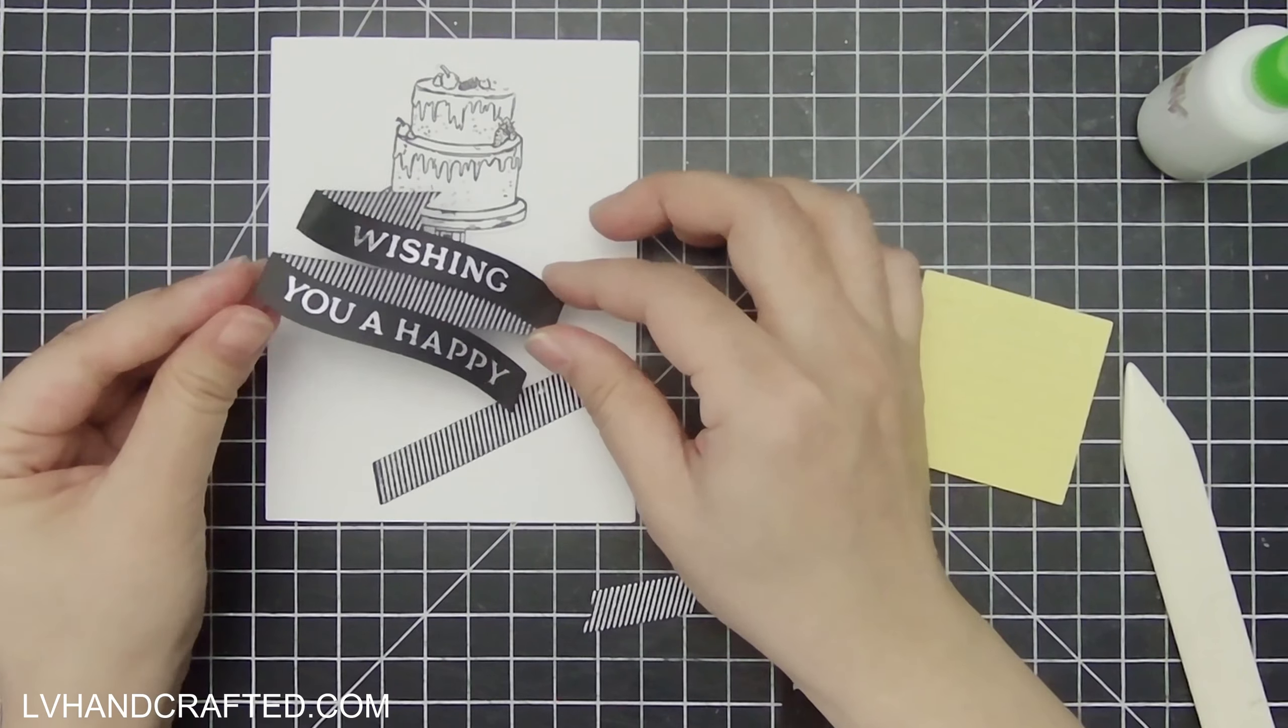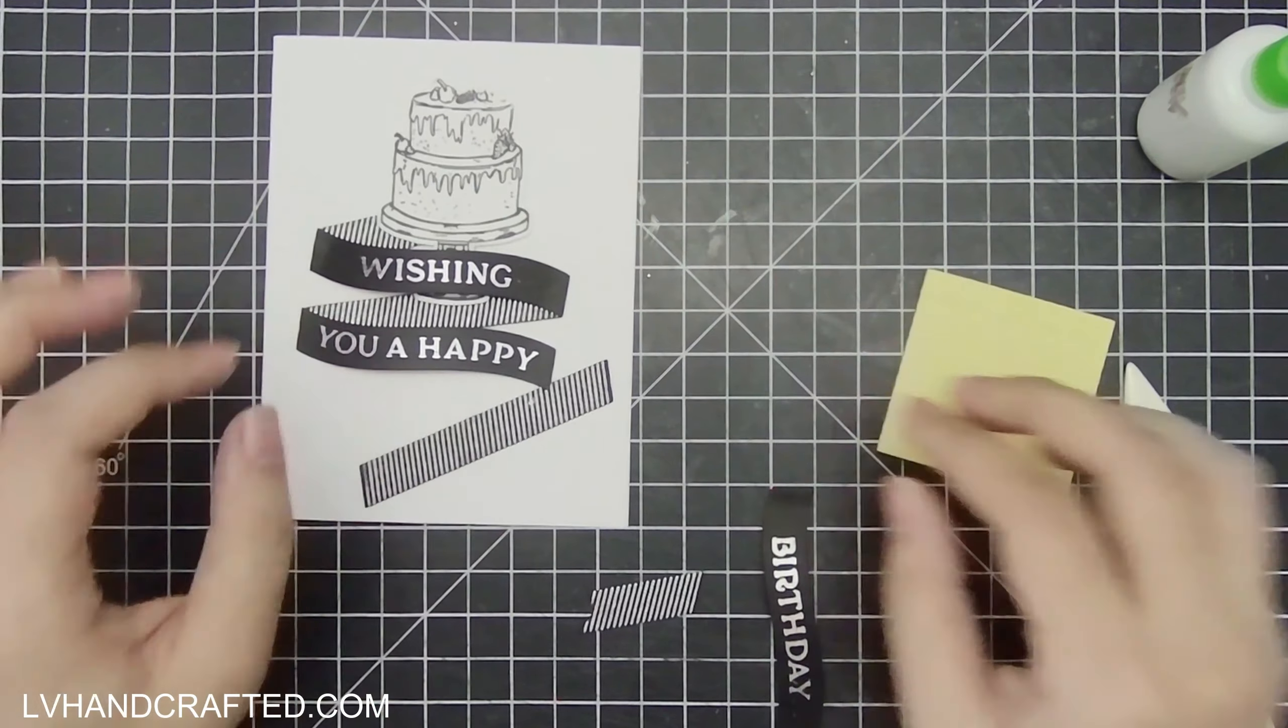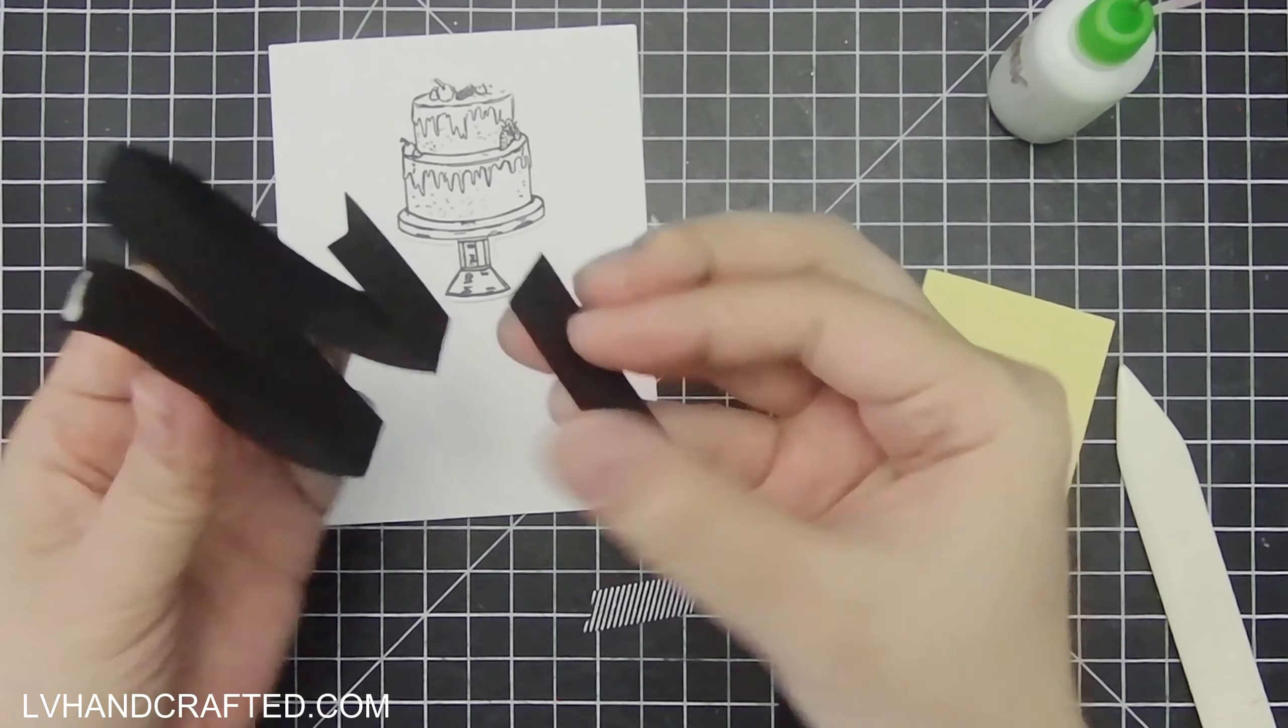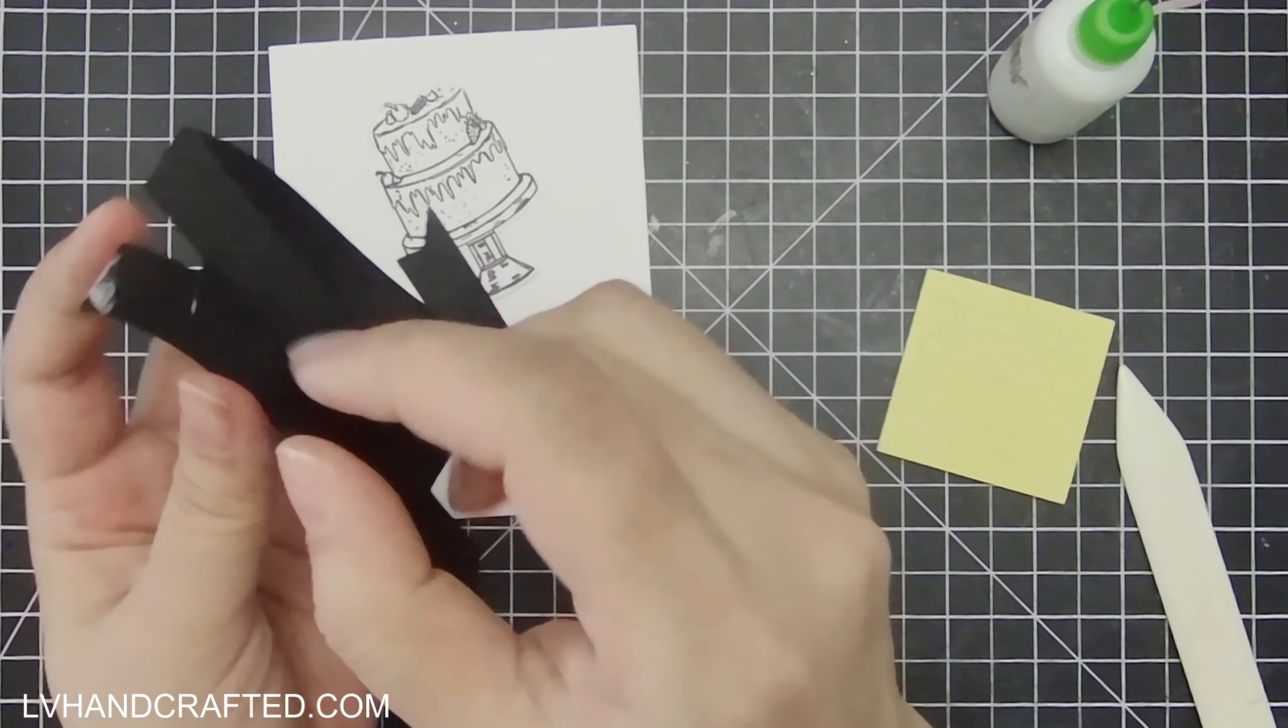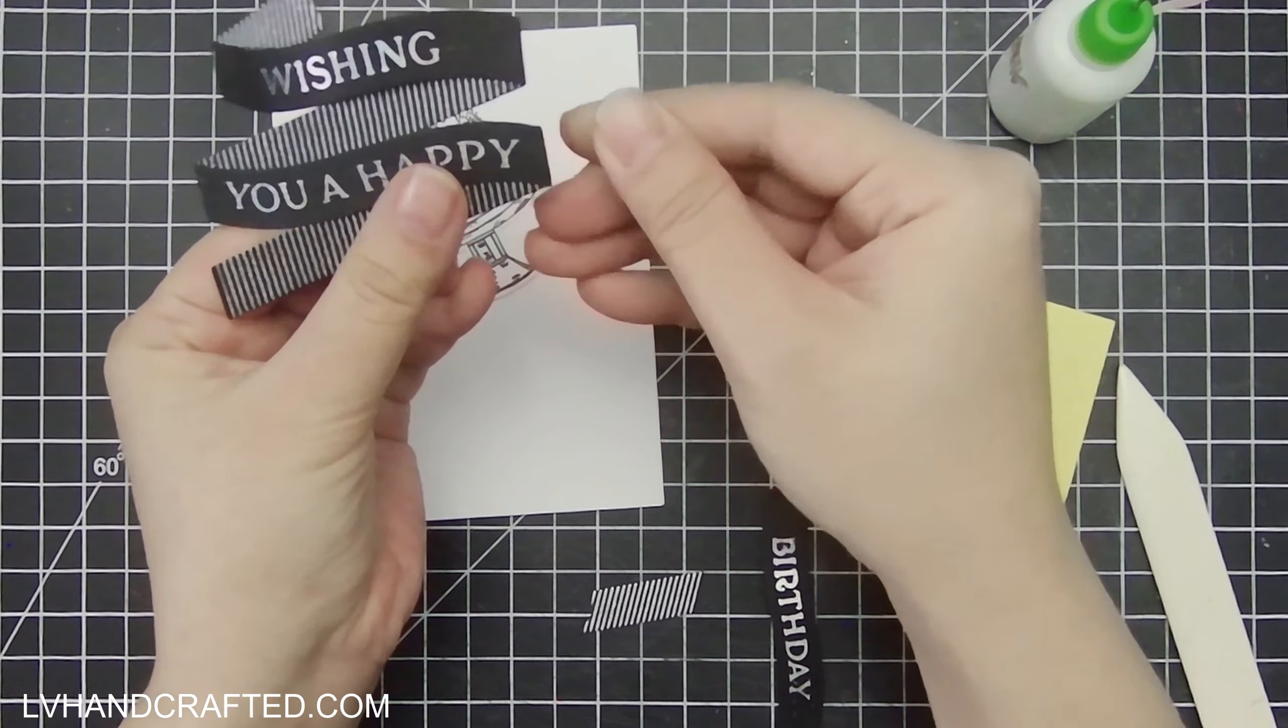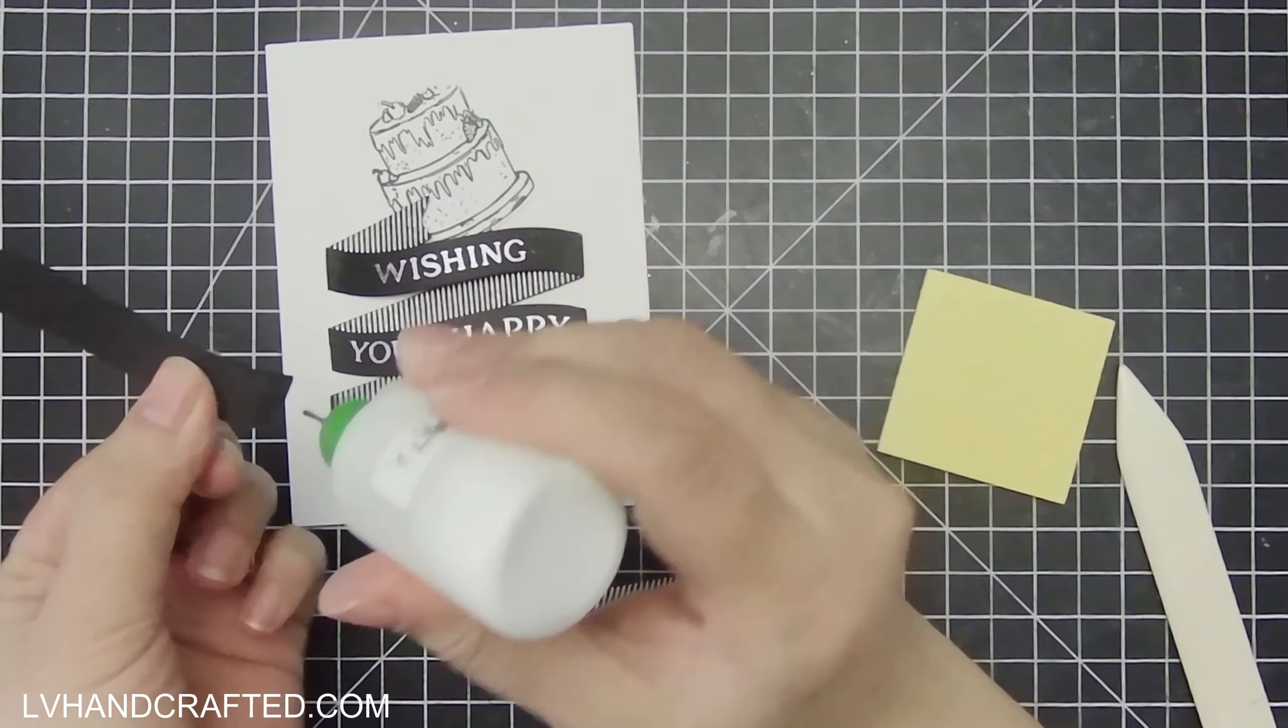the layers of the banner that have the striping, those will lay and adhere flat to the card base. And I'm not even going to color in the stamped image of the cake because I really like this very simple, clean card where it's just black and white.